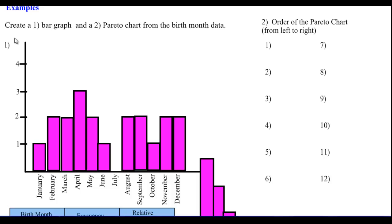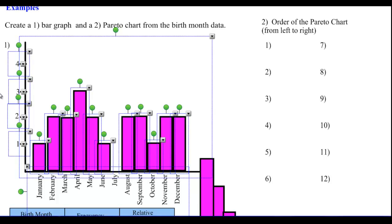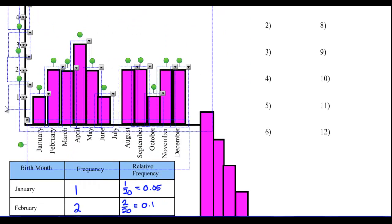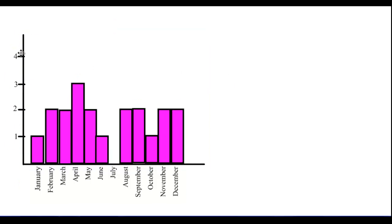Now let's do the relative frequency bar graph. Instead of 1, 2, 3, and 4, we change those numbers to the relative frequencies. Whenever we had 1 that was a relative frequency of 0.05; whenever we had 2 that was 0.1; and 3 was 0.15. It's the same shape — all we're doing is changing from frequency to proportion on the vertical axis.